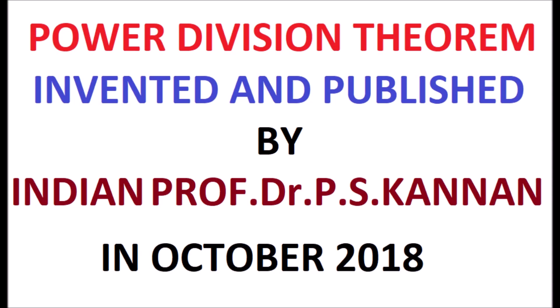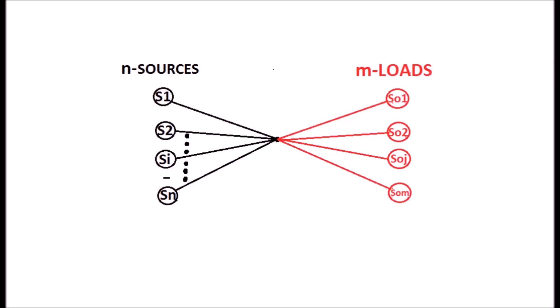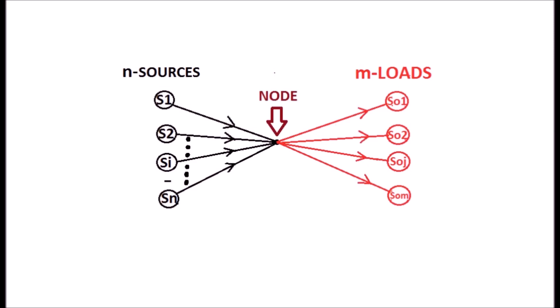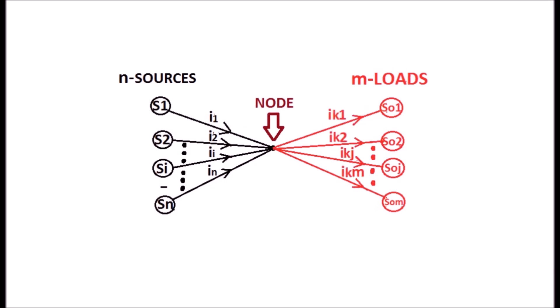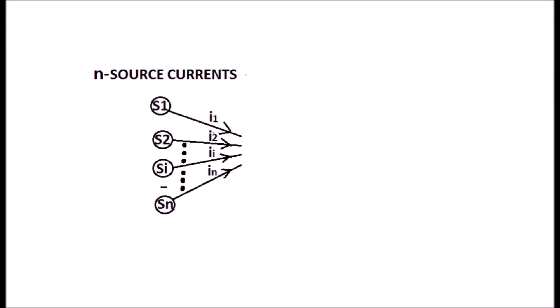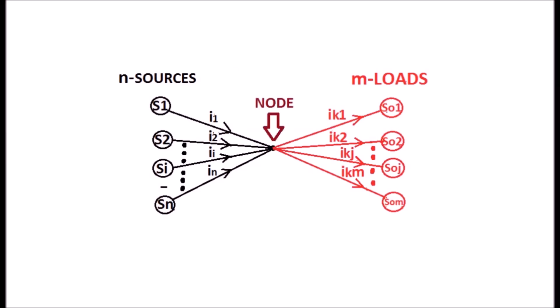The theorem states that there are N source currents feeding power to the M loads through a node. The source currents are I1 to IN. The load currents are IK1 to IKM as shown in the display. The same N source currents are feeding power to the M loads through a network instead of a node.